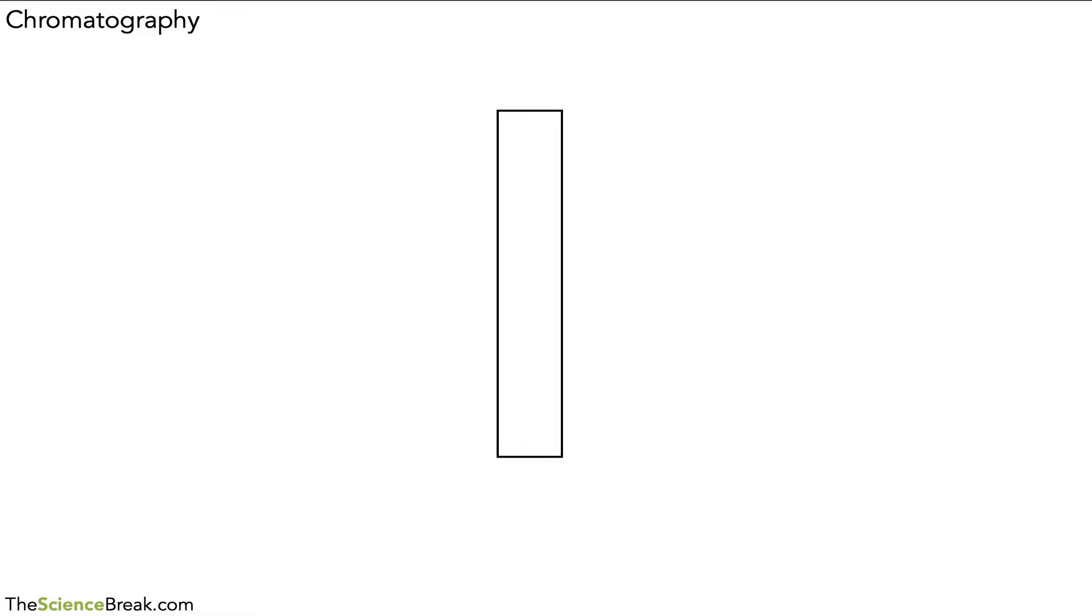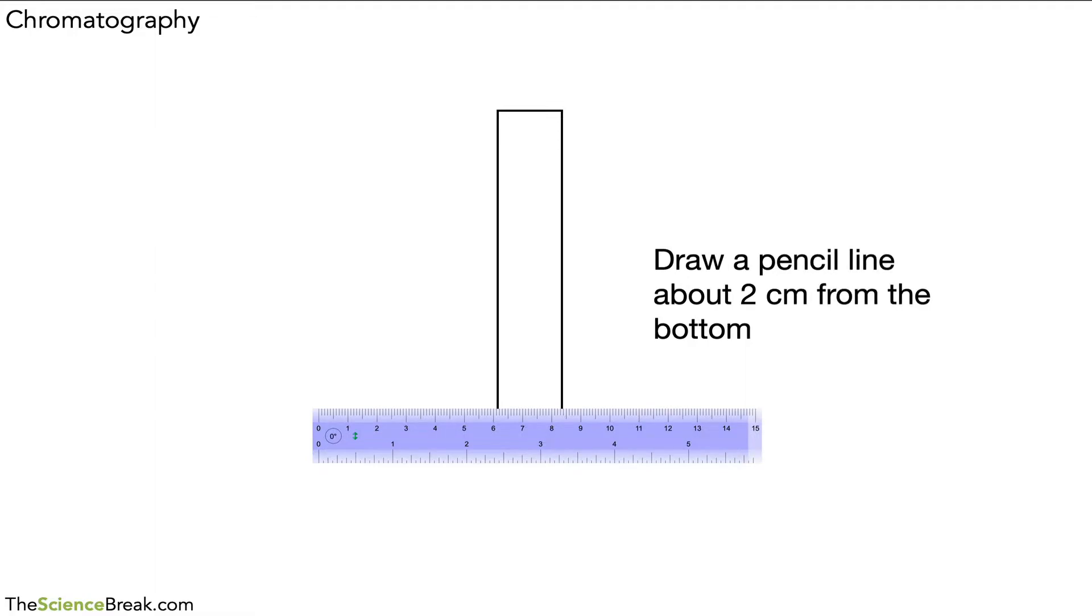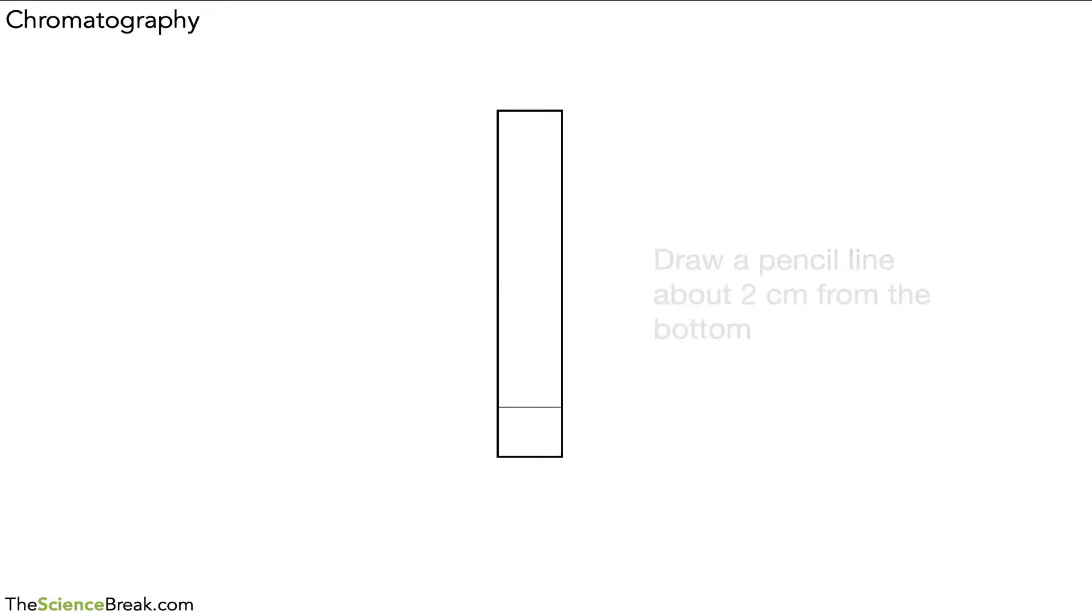Now the first thing we have to do is put a line on the chromatography paper near the bottom, about two centimeters up from the bottom. This line must be in pencil. Use a ruler to keep it nice and neat and straight. It's very important that the line is done in pencil and not in any kind of ink or pigment itself, because we want it to not be washed away, and we'll see why that is in a second.